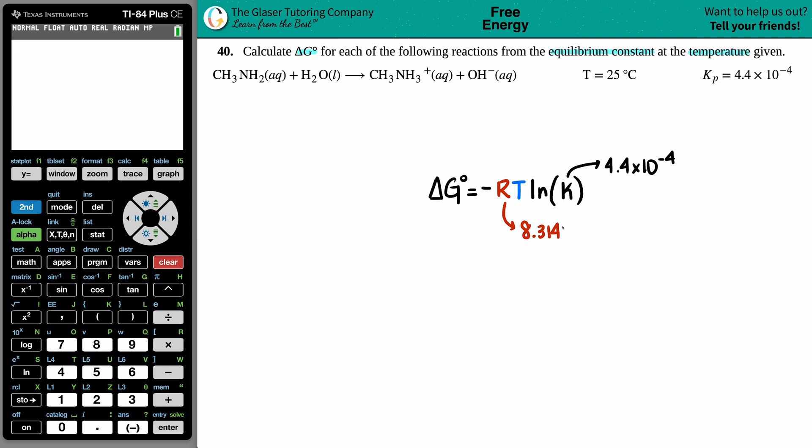If we're using 8.314, the units are joules per mole times Kelvin. But it's Kelvin, not Celsius. So, in order for me to use the temperature, I have to convert this Celsius into Kelvin.